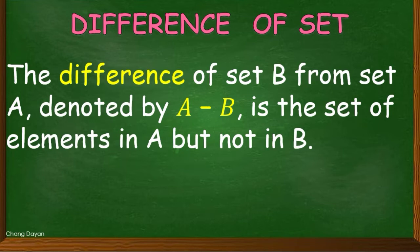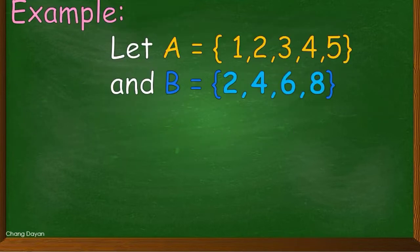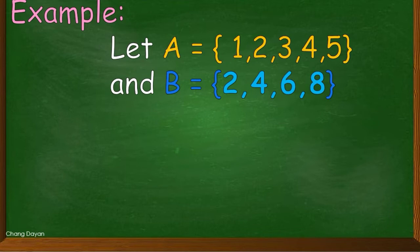Let us consider this given. These are the given from our recent activity wherein set A consists of elements 1, 2, 3, 4, 5. And B consists of 2, 4, 6, 8.